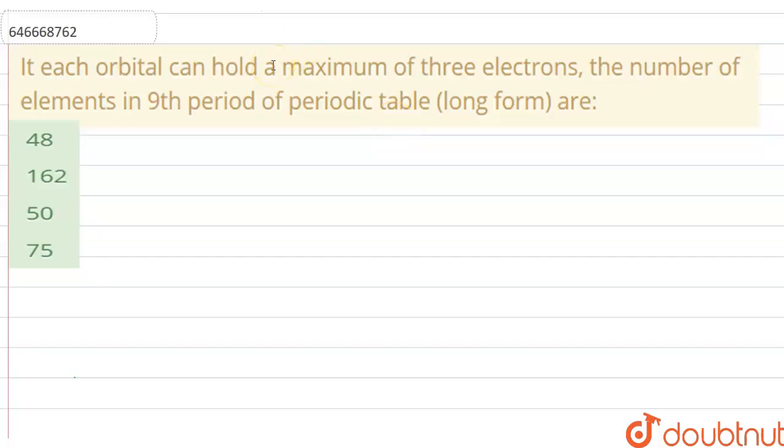And your question is here. If each orbital can hold a maximum of three electrons, the number of elements in ninth period of periodic table long form are...